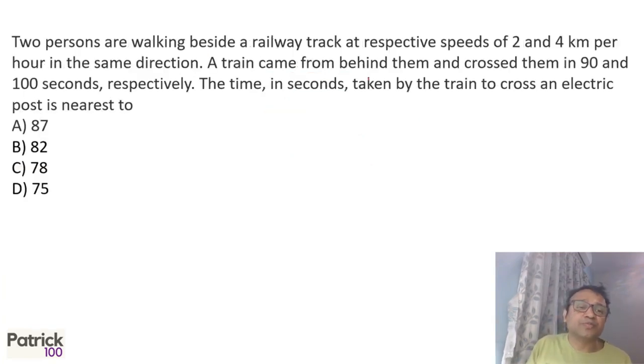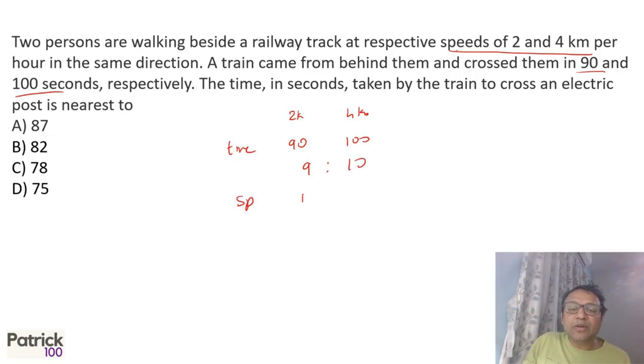Two persons walking beside a railway track at respective speeds of 2 and 4 kilometers per hour. Here time is given 90 seconds and 100 seconds. So two cases: 2 km/hr walker and 4 km/hr walker. Ratio of the time is 90:100, which is 9:10. So ratio of speed will be 10:9. If ratio of time is 9:10, ratio of speed is 10:9.